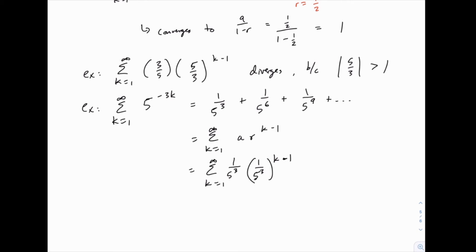So because 1 over 5 to the third is less than 1 in absolute value, this thing converges, and we can actually tell that it converges to 1 over 5 to the third—that's a—over 1 minus the same thing, which is r.